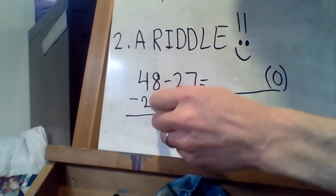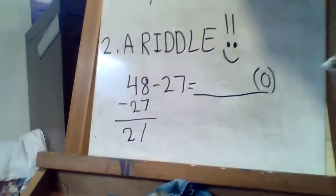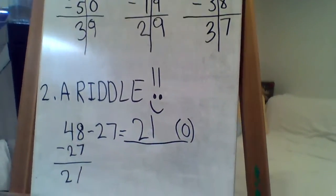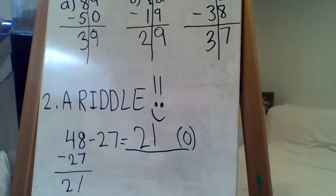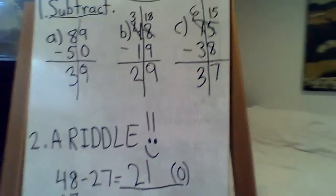Minus 27. And then 8 take away 7 is just 1. And 4 take away 2 is 2. And that means it's 21. And under the O is 21. So I do see a 21 there on the third word. So I will put an O under the 21. And continue to find out. Hmm, elves. Interesting. I love those riddles.